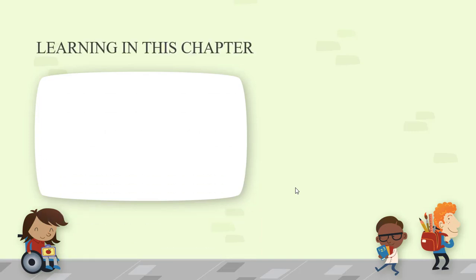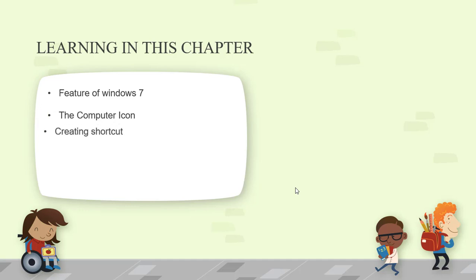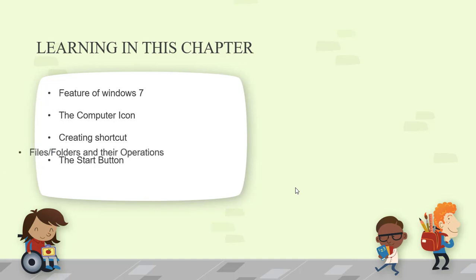The learning outcomes of this chapter are: first, features of Windows; second, the computer icon; third, creating shortcuts; and fourth, the Start button; and at the end, file folders and their operations. In this lecture, we will discuss only the features of Windows 7.